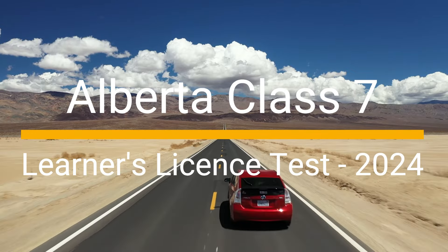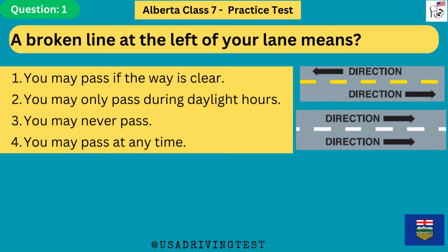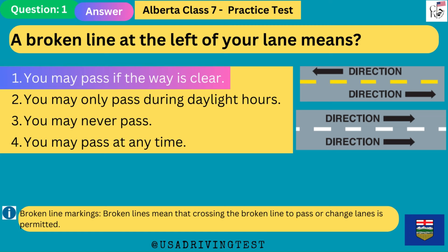Alberta Class 7 Learner's License Test 2024. A broken line at the left of your lane means? 1. You may pass if the way is clear. 2. You may only pass during daylight hours. 3. You may never pass. 4. You may pass at any time. The answer is 1: you may pass if the way is clear. Broken lines mean that crossing the broken line to pass or change lanes is permitted.